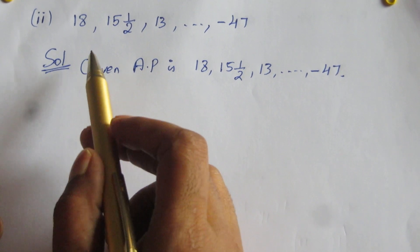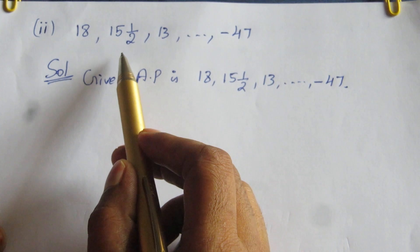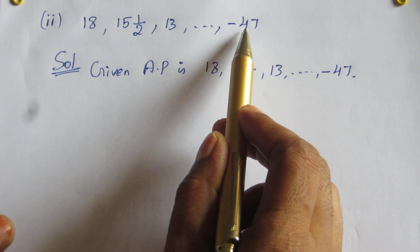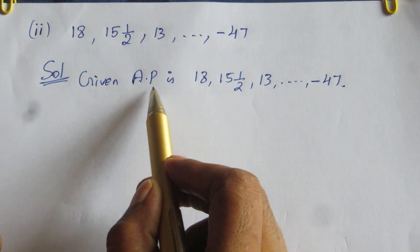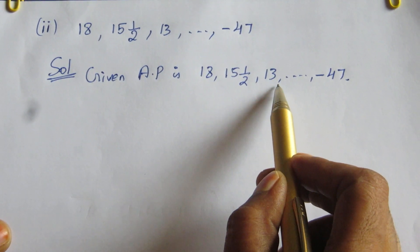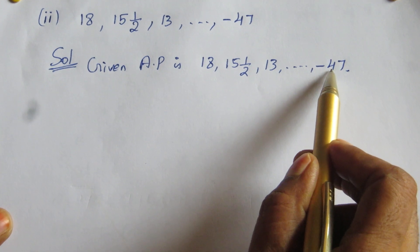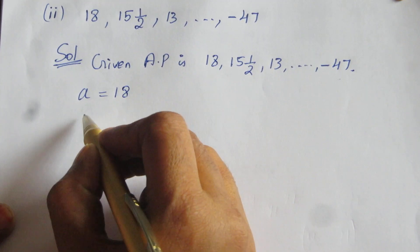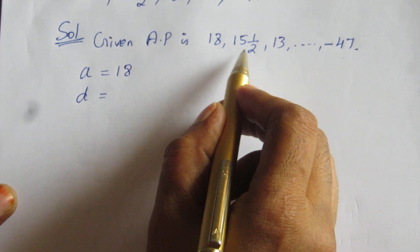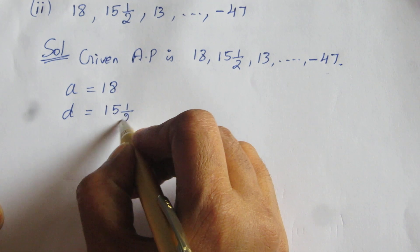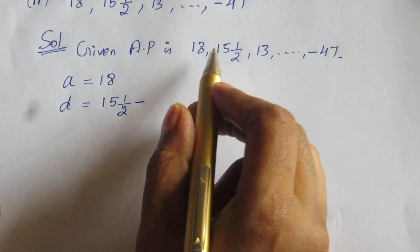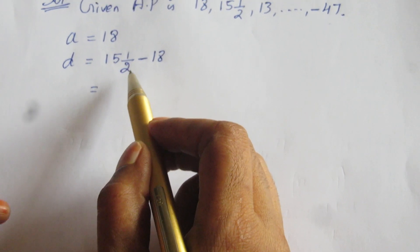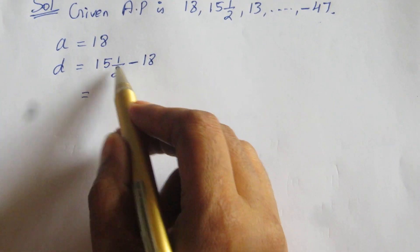Students, the 5th question's second part: Find the number of terms in each of the following AP: 18, 15½, 13, up to minus 47. Given AP is 18, 15½, 13, ..., up to minus 47. The first term is 18. For common difference D equal to A2 minus A1, we need to convert the mixed fraction 15½ to a proper fraction.